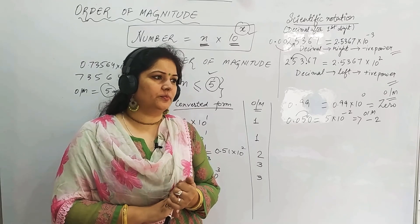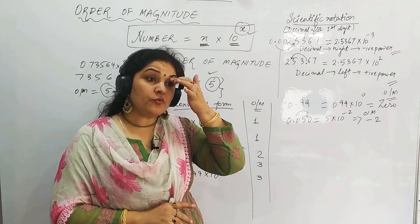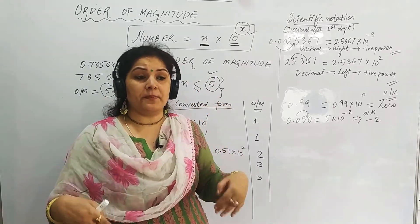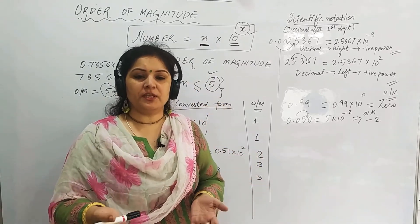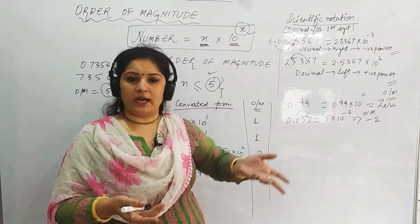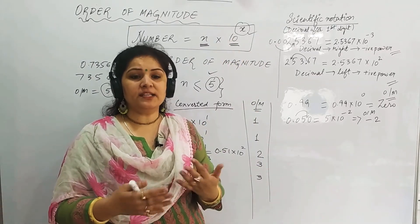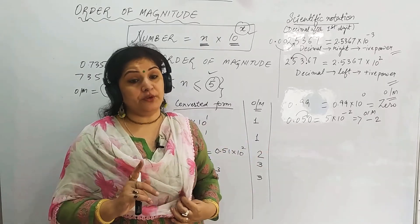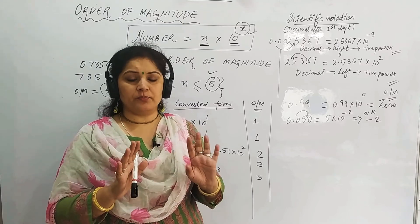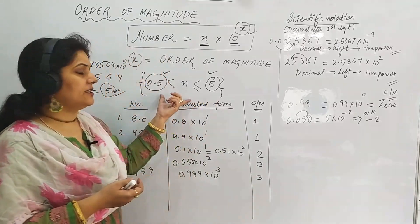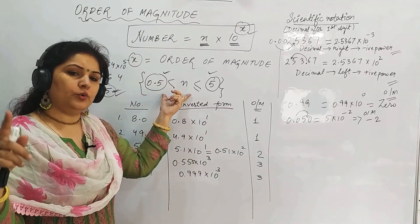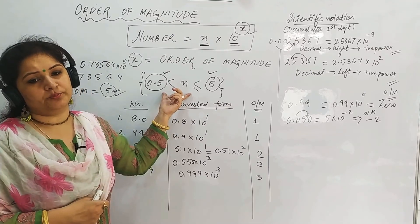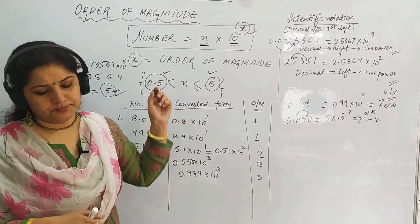What is the order of magnitude of human height in meters? In feet it might be 5-something, but in meters our height is around 1.3, 1.4, 1.5 — hardly anyone is 2 meters. So it's 1.something, which means it's already in the valid range. We can write it as 1.something × 10⁰. So the order of magnitude of human height is 0.